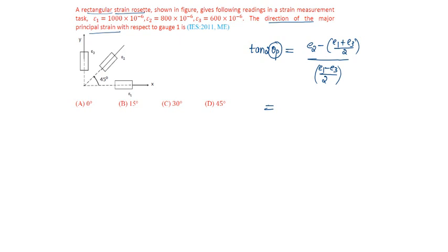That is equal to E2 is given as 800 times 10 power minus 6, minus E1 is 1000 plus 600 times 10 power minus 6 by 2, divided by 1000 minus 600 by 2 times 10 power minus 6.